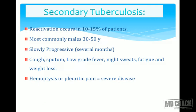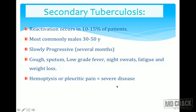Reactivation occurs in around 10 to 15 percent of patients, more commonly in males aged 30 to 50 years, and is slowly progressive over several months. Classical signs and symptoms of secondary tuberculosis include cough with sputum production, low-grade fever with an evening rise of temperature, night sweats, fatigue, weight loss, and chronic cough lasting more than six months — all reasons to suspect tuberculosis.